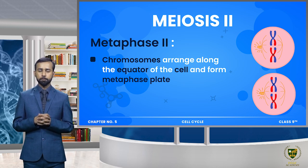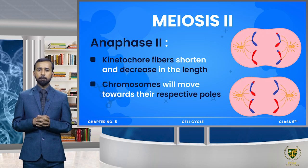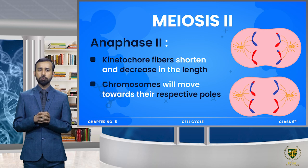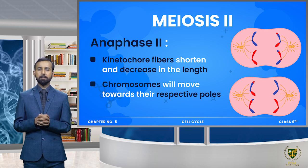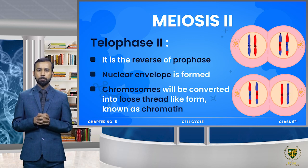Metaphase 2 میں chromosomes center میں along the equator align ہوں گے اور spindle fibers ان کے ساتھ connected ہیں۔ Next stage جو ہے وہ ہے anaphase 2 - anaphase 2 میں spindle fibers contract کریں گے اور chromosomes کو ان کے respective centrosomes کی طرف pull کریں گے، جس کی وجہ سے chromosomes اپنے اپنے respective poles کی طرف move کریں گے۔